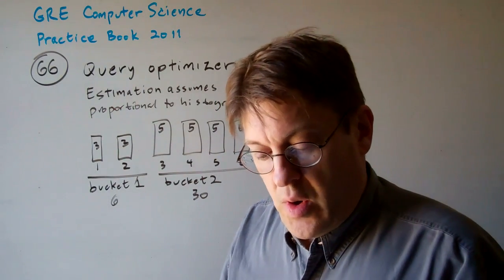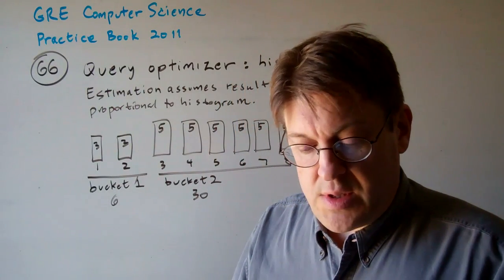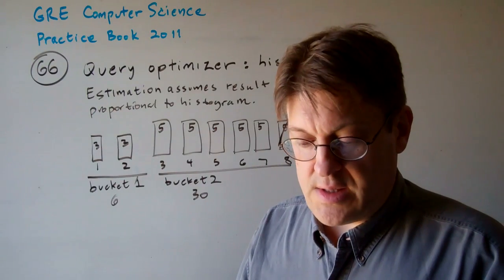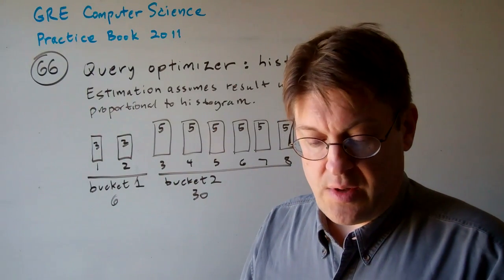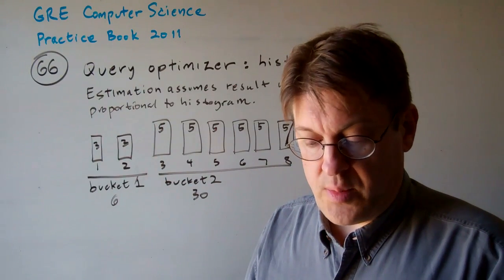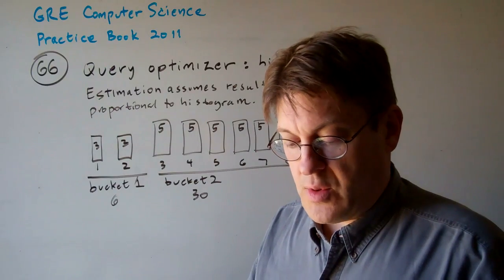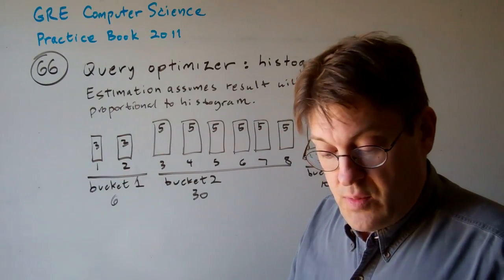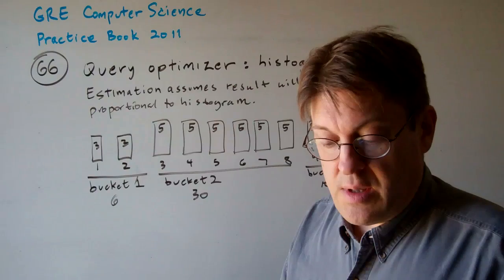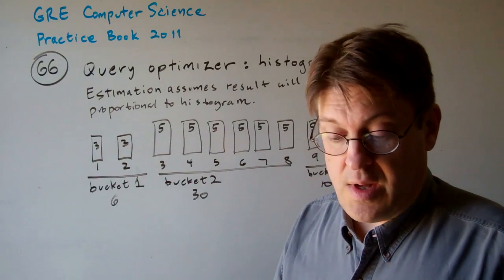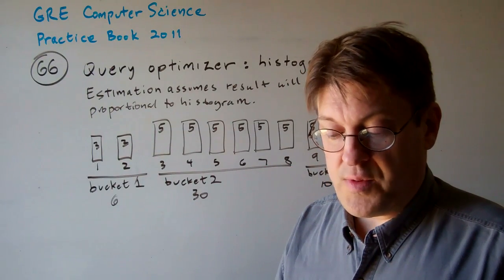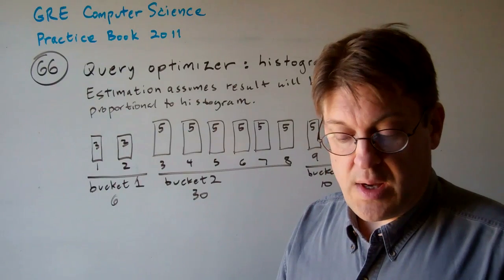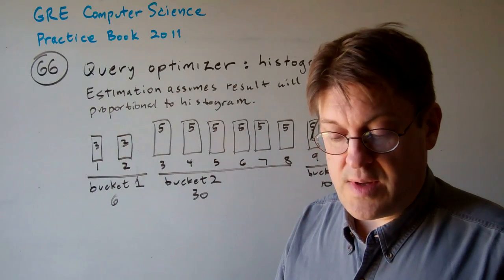Question 66. Query optimizers typically use summaries of data distributions to estimate the sizes of intermediate tables generated during query processing. A popular summarization scheme is histogram, where the input range is partitioned into buckets and a cumulative count is maintained of the number of tuples falling in each bucket. The distribution within a bucket is assumed to be uniform for the purposes of estimation.